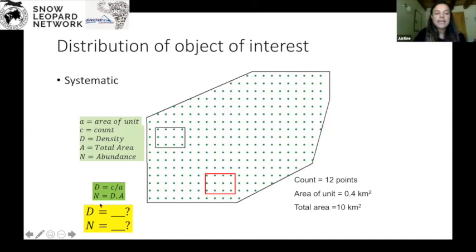And based on D, then you can calculate abundance, which is density times total area, which we have here. So go ahead, try to calculate D and N, and feel free to ask any questions on it if this doesn't make sense. So the formulas are right here for you to refer to. And we're interested in understanding density and abundance.